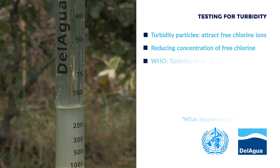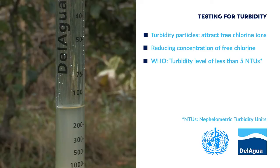The World Health Organisation suggests a turbidity level of less than 5 NTUs for drinking water safety when used in conjunction with a free chlorine reading of 0.2 mg per litre.